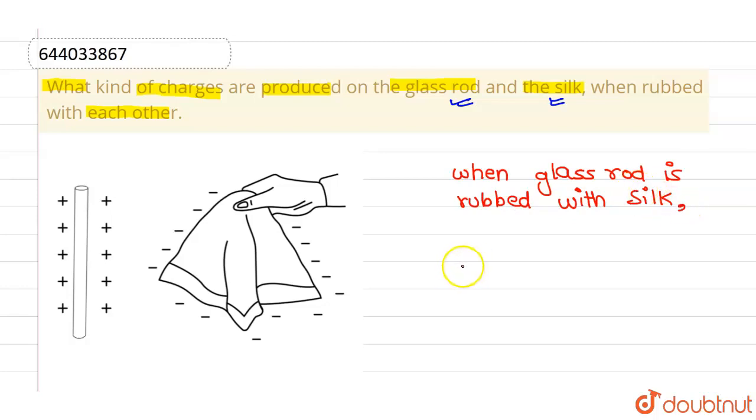And the silk cloth acquires negative charge. The glass rod acquires positive charge because it loses electrons.